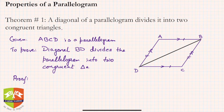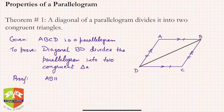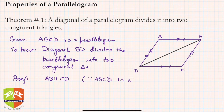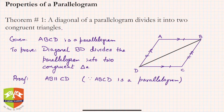Since ABCD is a parallelogram, therefore we can write AB is parallel to CD. This is the first step — we know AB is parallel to CD because ABCD is a parallelogram.